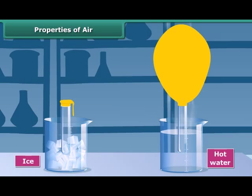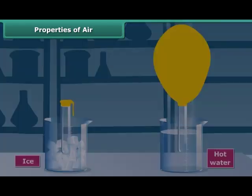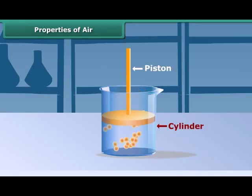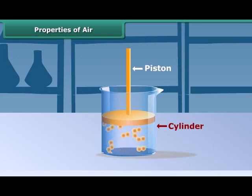On the other hand, cool air contracts, causing the other balloon to shrink. This shows that air exerts pressure. Take a cylinder fitted with a piston, press the piston inward — you can compress the air inside the cylinder. So air can be compressed.